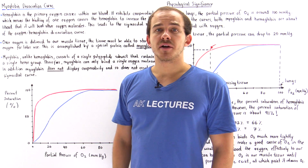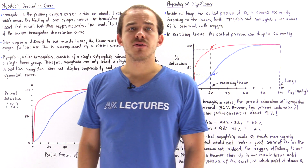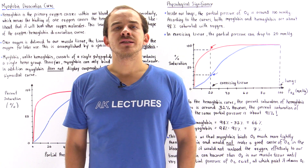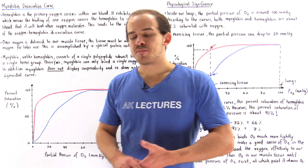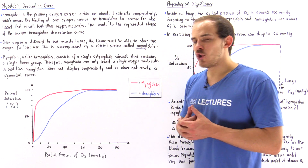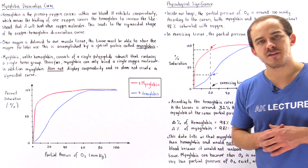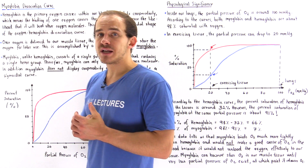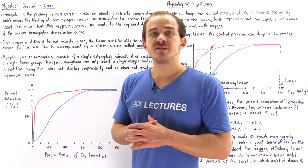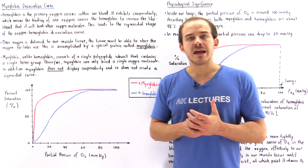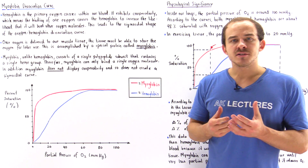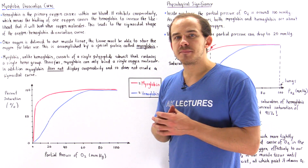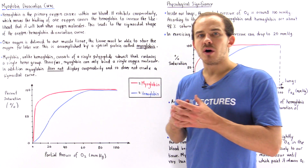Hemoglobin is the primary oxygen carrier in our blood. It delivers oxygen from the lungs to the tissues of our body. Hemoglobin consists of 4 individual polypeptide subunits, and each one of these polypeptide subunits contains a single heme group that is capable of binding oxygen molecules. Because these 4 polypeptides can interact with one another,